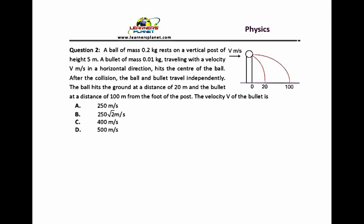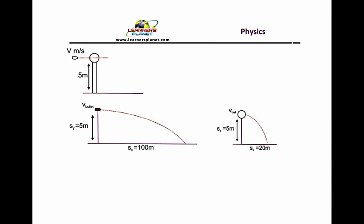Now, let us look at the second problem. This again was a very simple problem. A ball of mass 0.2 kg rests on a vertical post of height 5 meters. A bullet of mass 0.01 kg traveling with a velocity v meter per second in a horizontal direction hits the center of the ball. In this problem, we have to determine the velocity v of the bullet.